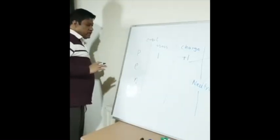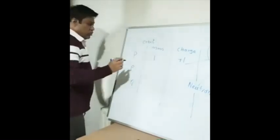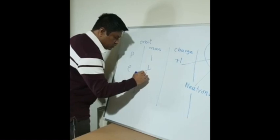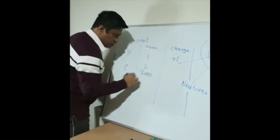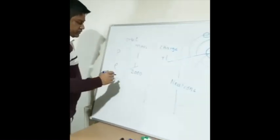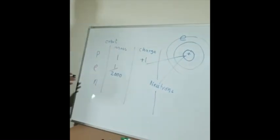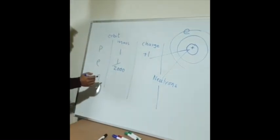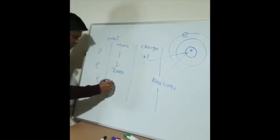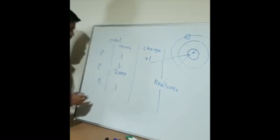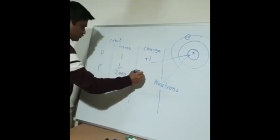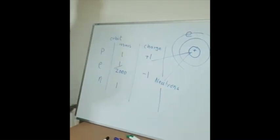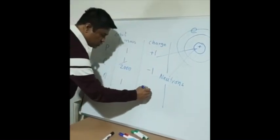The mass of the electron is very negligible — that's 1/2000. This is not the actual mass but it's fine for GCSE and A-level. The mass of the neutron is 1. The charge of the electron is −1, and the neutron has no charge — zero charge.